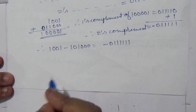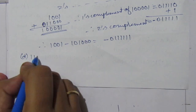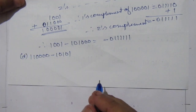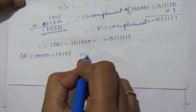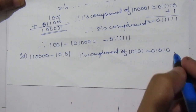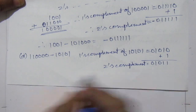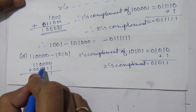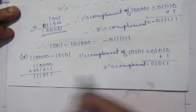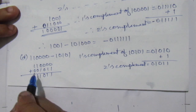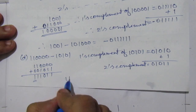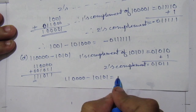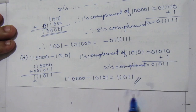Now let us do the fourth part D. In D we have 110000 minus 10101. The similar process is repeated. We can see there is a carry of 1. Because of this carry, the answer is positive. Therefore, 110000 minus 10101 equals 11011. So this will be the answer.